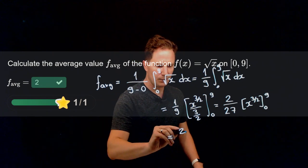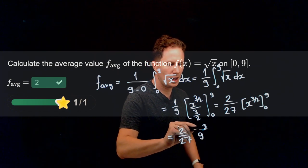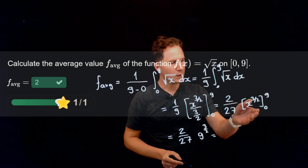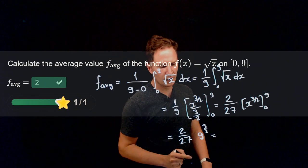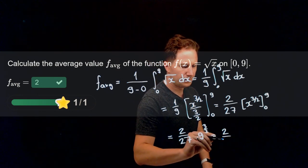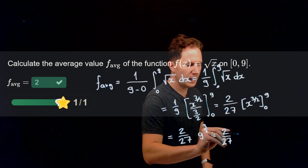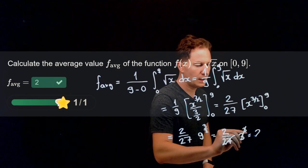Now 2 over 27 times 9 to the 3 halves is what we get because at x equals 0 we get 0 for a contribution. This is the square root of 9 raised to the third power. Therefore we get 3 cubed, that's 27. Therefore we get 2.